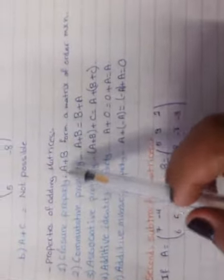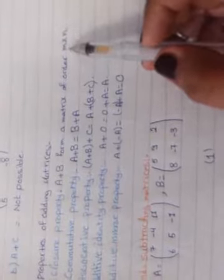Properties of adding matrices. First, closure property, because if the same order of matrices, the matrix that obtained, it will be from the same order, M times N.